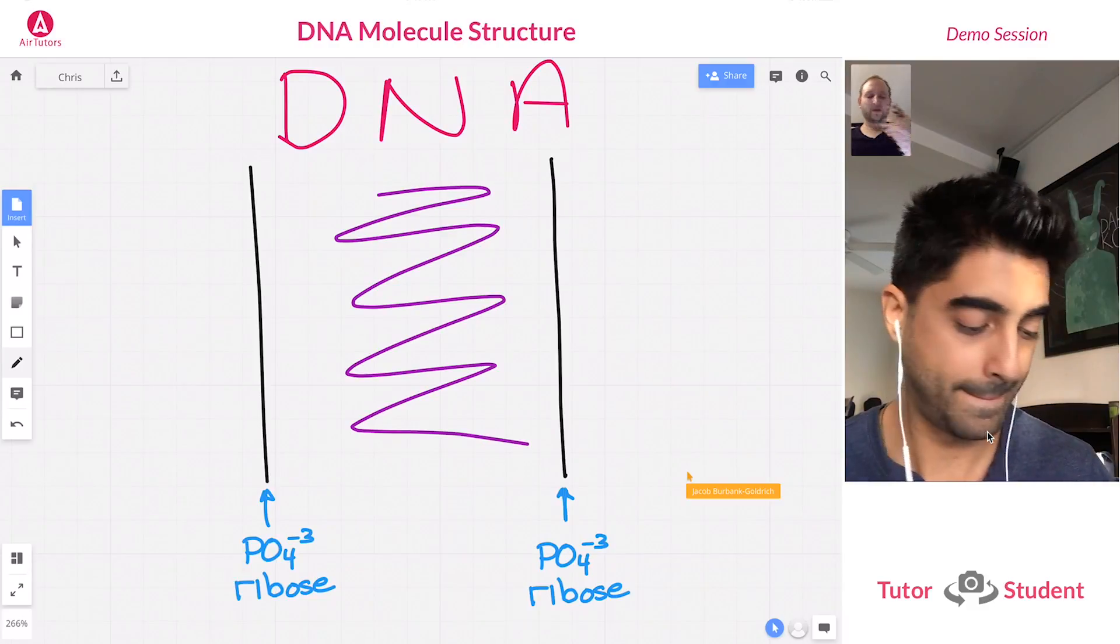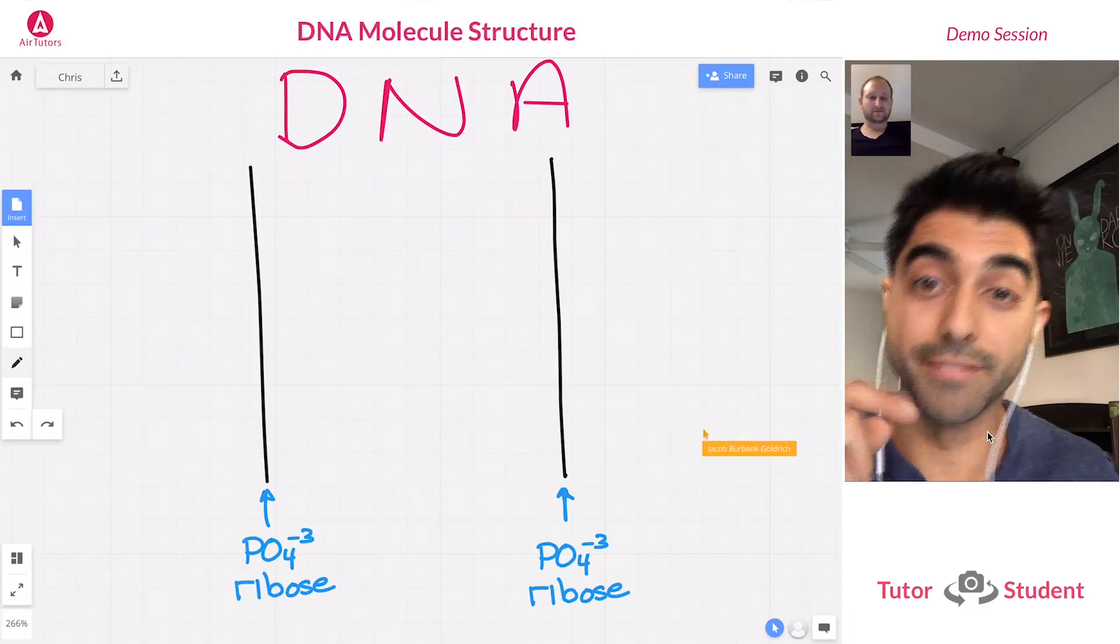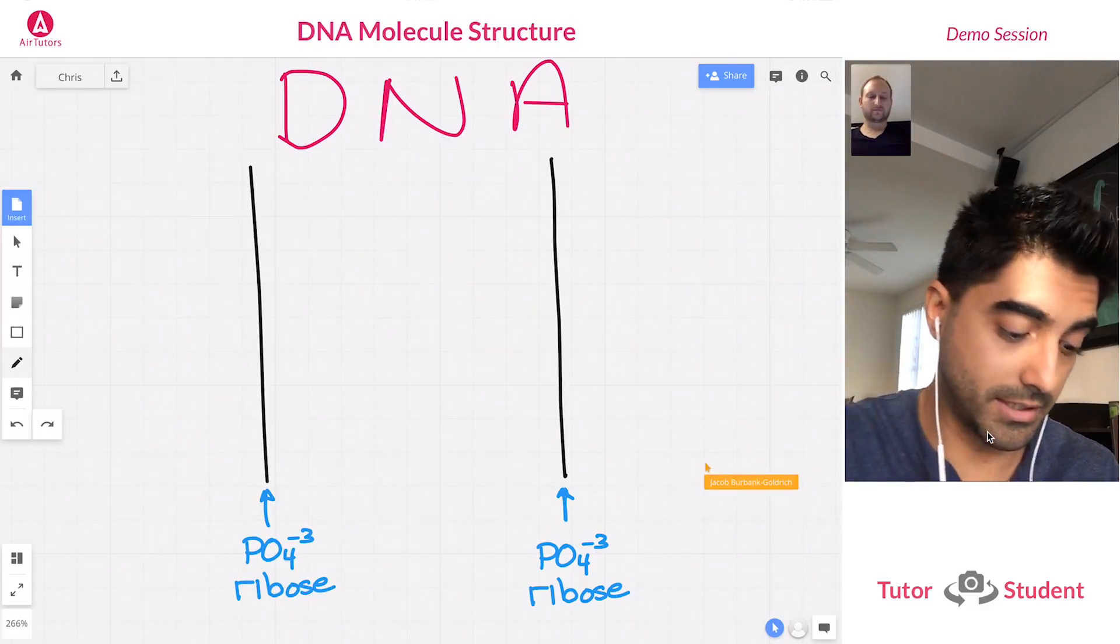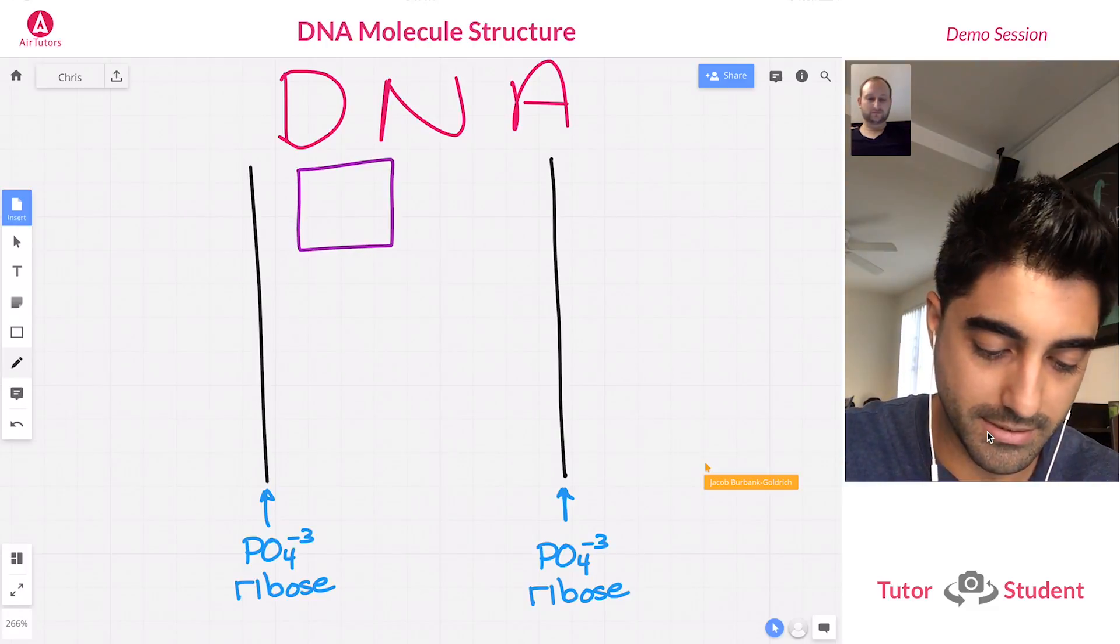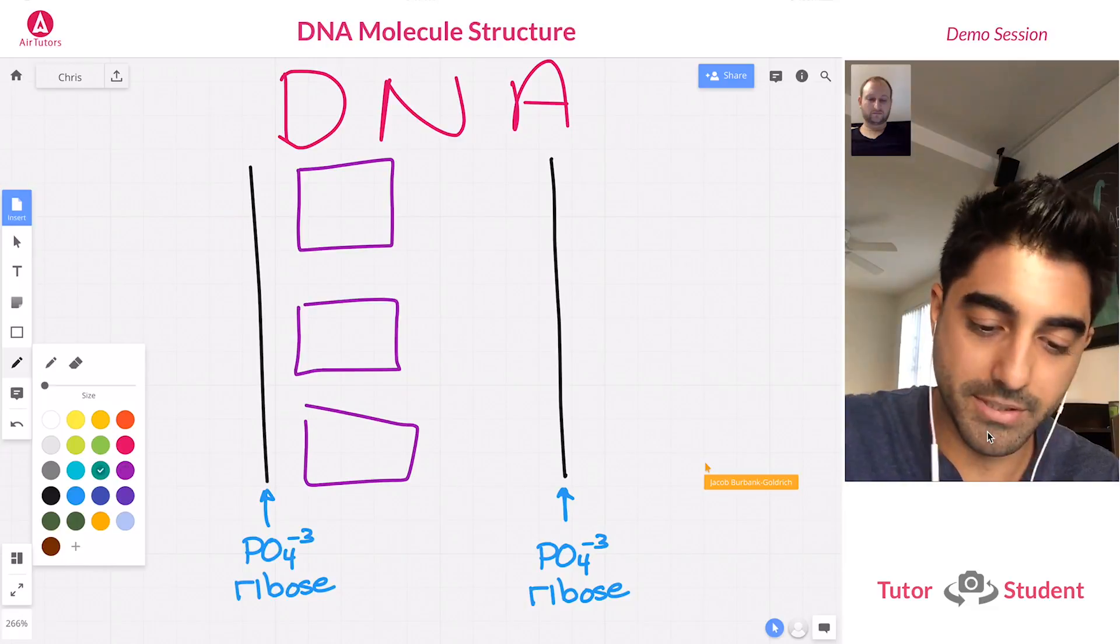I just remember letters pairing together, some sort of pairings. Yeah, perfect. So nitrogenous bases base pair with each other. So let's just draw three nitrogenous bases here, here, and here, and on the opposite side let's draw three more nitrogenous bases.